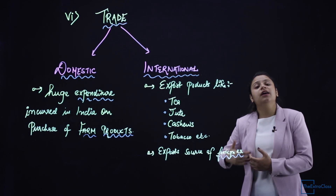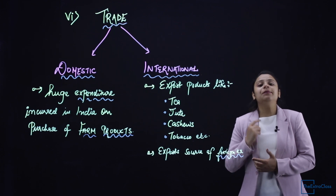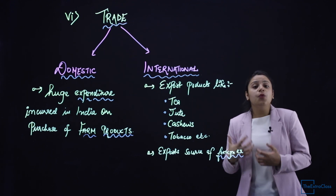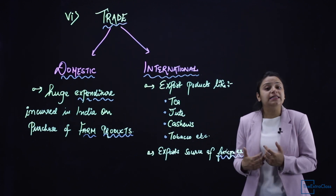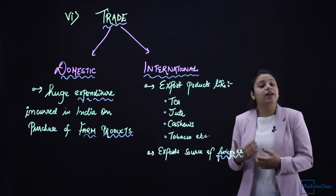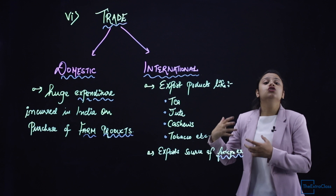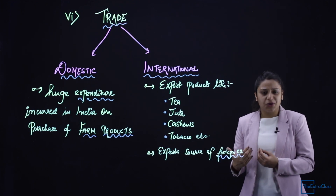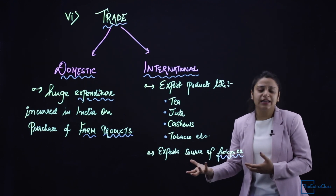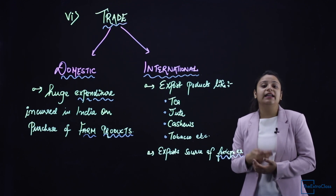Internationally, India exports many things, including tea, jute, cashews, tobacco, and coffee. Exports are an important source of foreign exchange. India also imports many things it needs, such as defense machinery and crude oil, because those resources are not available domestically. The exports from agriculture act as a source of foreign exchange that can be used to pay for these imports. This is how agriculture supports both domestic and international trade.